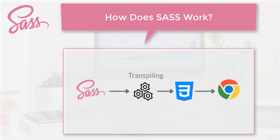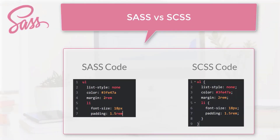SASS files use either the .sass or .scss extension — SCSS stands for SASS CSS. Both work, but they differ in syntax: .sass is indentation-sensitive and has no curly braces or semicolons, while .scss uses curly braces and semicolons just like standard CSS. Throughout this tutorial we'll use .scss, which is the more popular approach. For reference, SASS was designed in 2006 by Hampton Catlin and later developed by Natalie Weizenbaum and Chris Epstein.